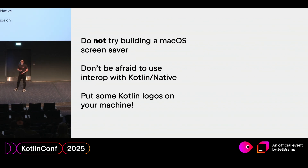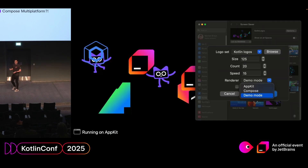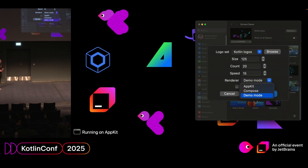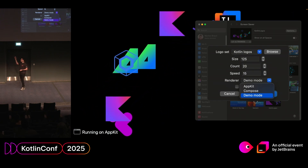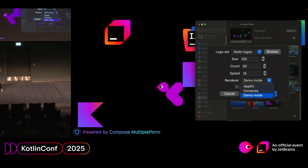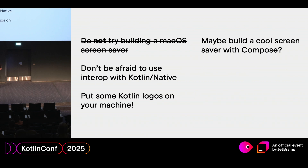You might be wondering: Martin, you give a lot of Compose talks — why are you building with AppKit? Well, it's a long story, but I eventually did get Compose Multiplatform working as well. The repo now has two different implementations and a switcher in settings where you can hop between AppKit mode and Compose mode, plus a demo mode that alternates every 10 seconds. With the Compose setup, you essentially get just a single Compose function — put any Compose code in there including Material UI, and it just works. You can ignore everything about screensaver packaging.